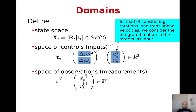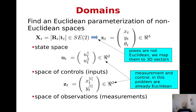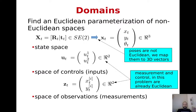The state space is an SE2 object. We have 2D controls already integrated over a time interval — the displacement in translation and orientation — and the observation space contains 2D points. In the particle filter, we can represent the state as a 3D vector; that's not mandatory since we're not representing a Gaussian distribution, but for simplicity we stick with the same parameterization used in the Kalman filter.